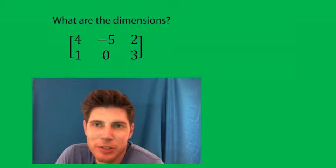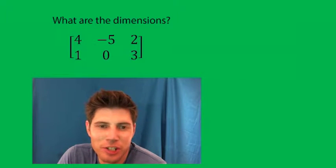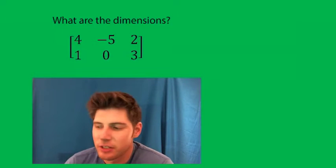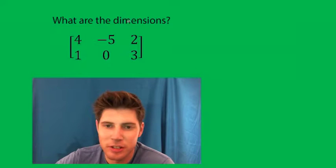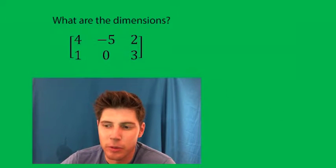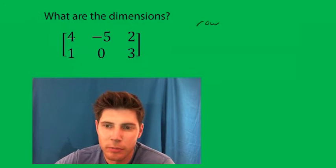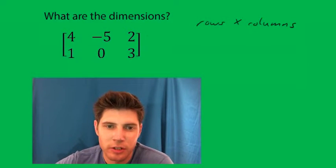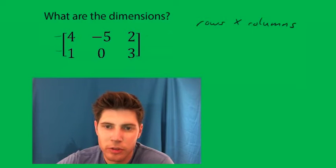Hey guys, welcome to this matrix question. It's asking whether the dimensions of a matrix are always the rows by the columns. So how many rows are there? Well, these are rows in this direction. So there are two rows.